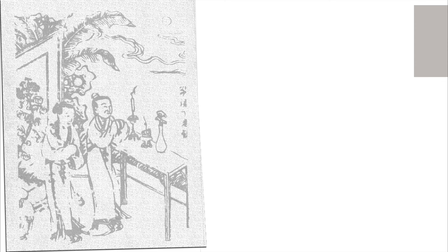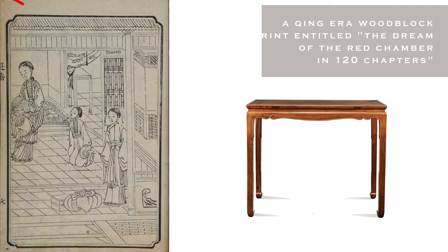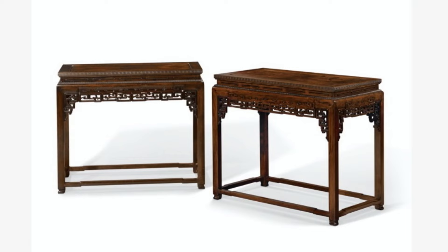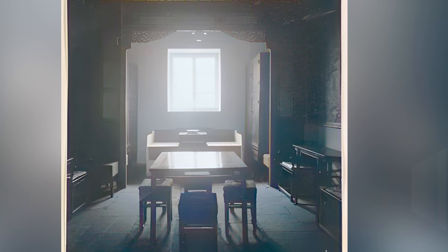Historically, half tables existed earlier than the Ming dynasty, but it was really during the Ming period that they appeared in greater quantities, with popularity rising further during the Qing era. A fair number have survived to the present day. They were often made in pairs and could be used with other tables, placed on either side of a hall for displaying objects, used standalone, or used similarly to a wine table. As with pairs generally, it's not uncommon for them to have been separated.